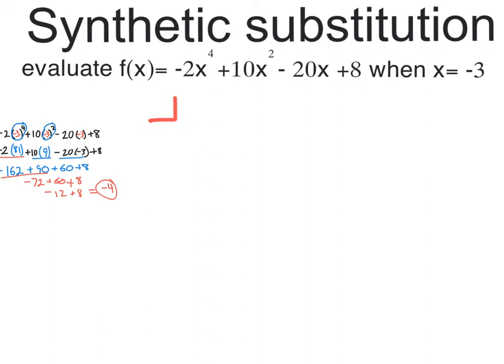Let me write down the negative 2, the 0 for the x to the power of 3, the positive 10 for the x squared, the negative 20, and the 8. Now we're going to draw that bar down there, and inside the box we plug in the value that you have right here for x, negative 3.